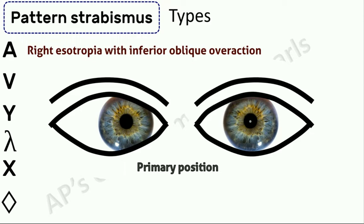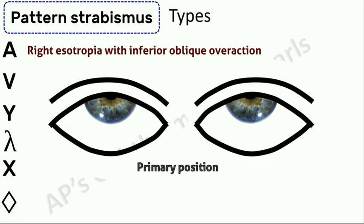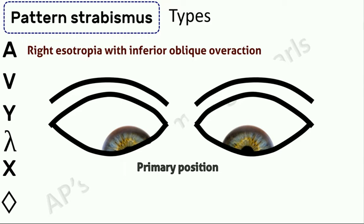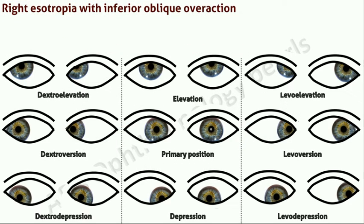Just as superior oblique overaction causes an A pattern strabismus, inferior oblique overaction causes a V pattern strabismus. The abducting action of the inferior oblique is greatest in elevation, and hence there is a greater divergence — that is, in a case of esotropia, there is less convergence in upgaze. The difference from upgaze to downgaze should be at least 15 prism diopters to be considered significant for a V pattern strabismus. You can appreciate the V pattern here. You can also see the over-elevation in adduction due to inferior oblique overaction in levoelevation.